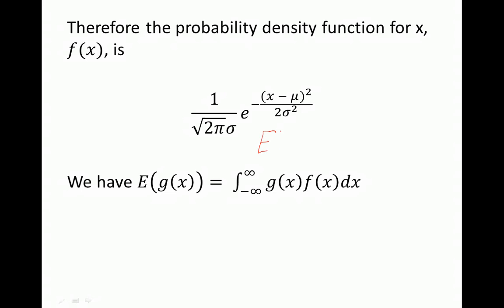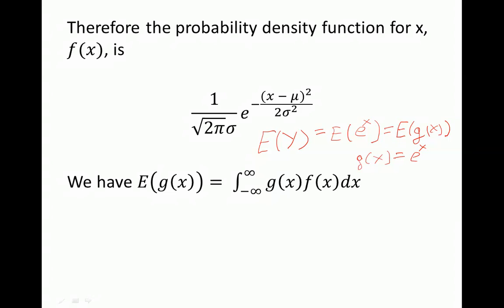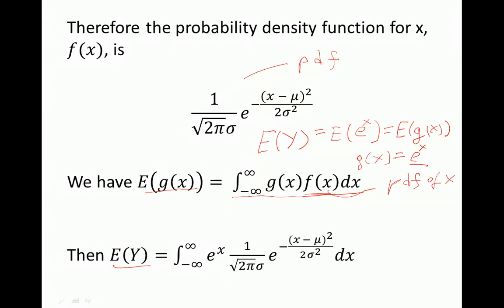Since we're interested in the expectation of y, which equals the expectation of e to the power of x, that means we want to compute the expectation of a function of x. We can name that g of x, where g of x equals e to the power of x. If we know the PDF of x and g of x equals e to the power of x, then the expectation of g of x equals the integral from negative infinity to infinity of g of x times f of x, where f of x is the probability density function of x — a normally distributed random variable with mean mu and variance sigma squared.